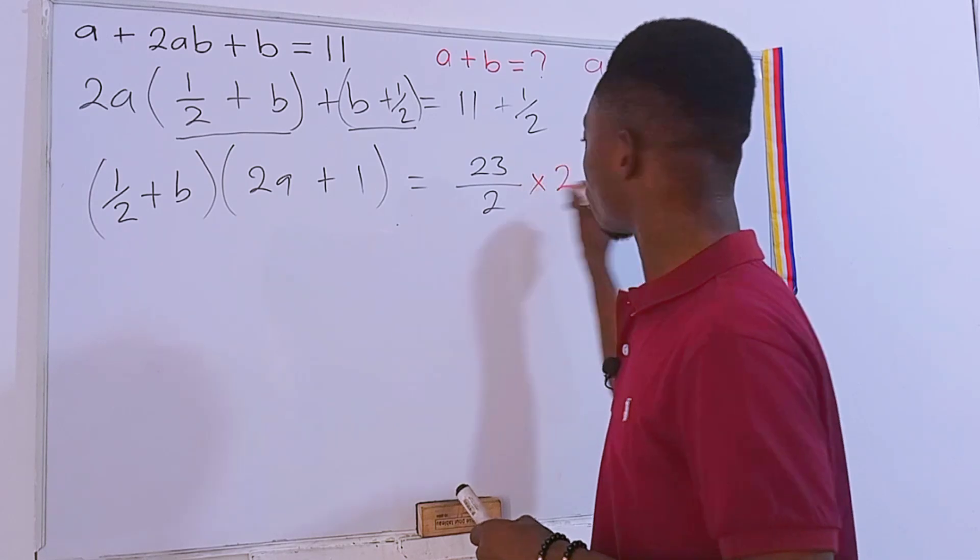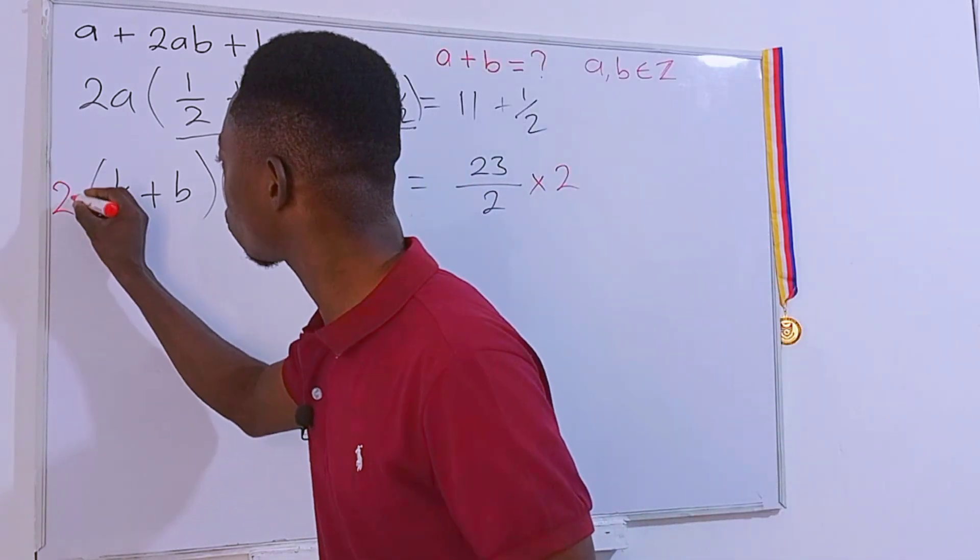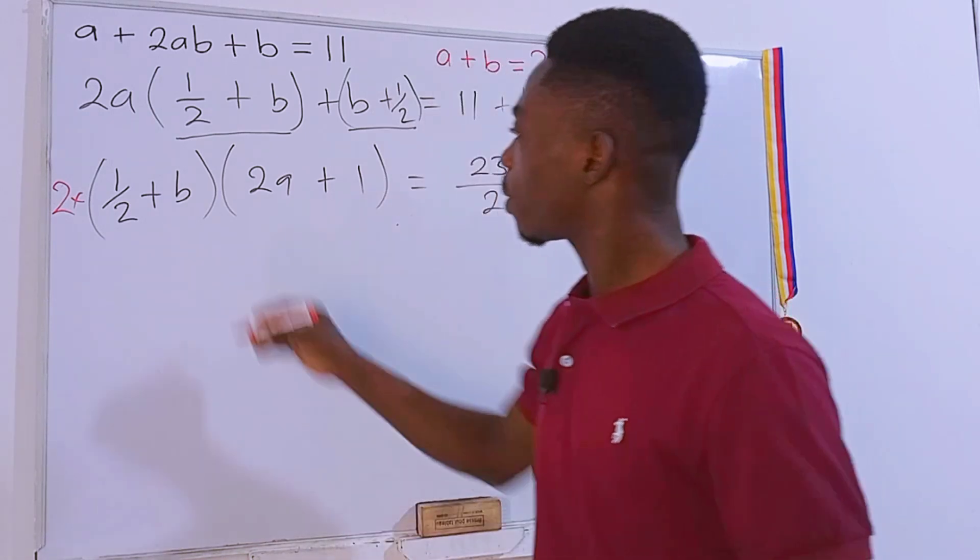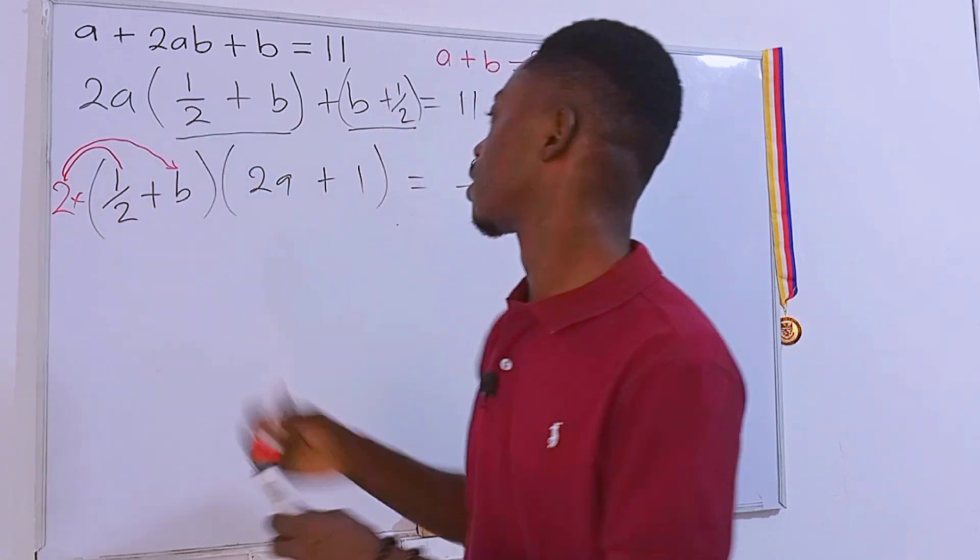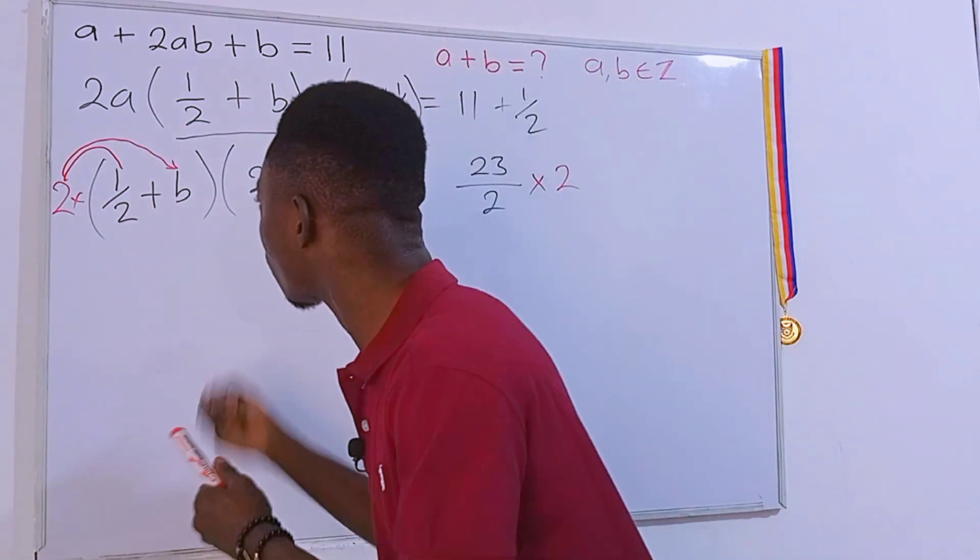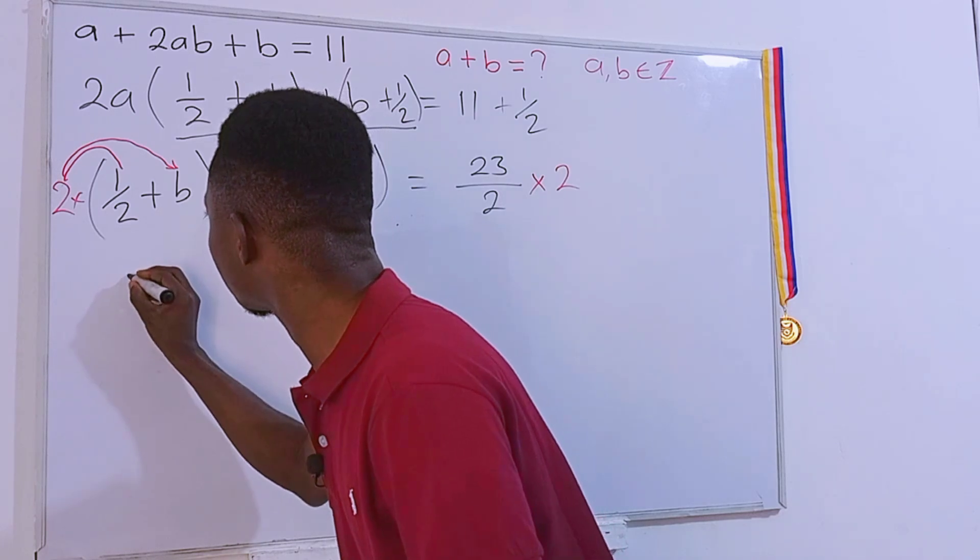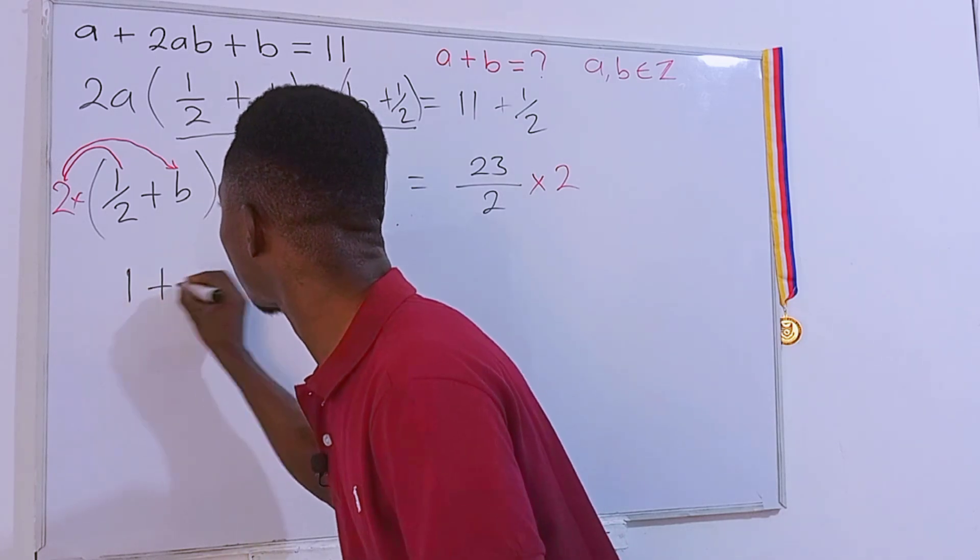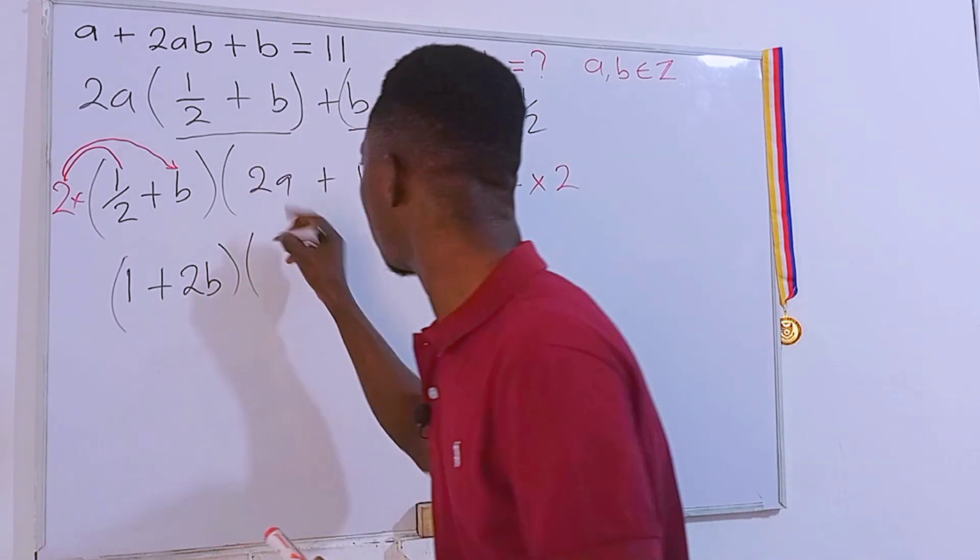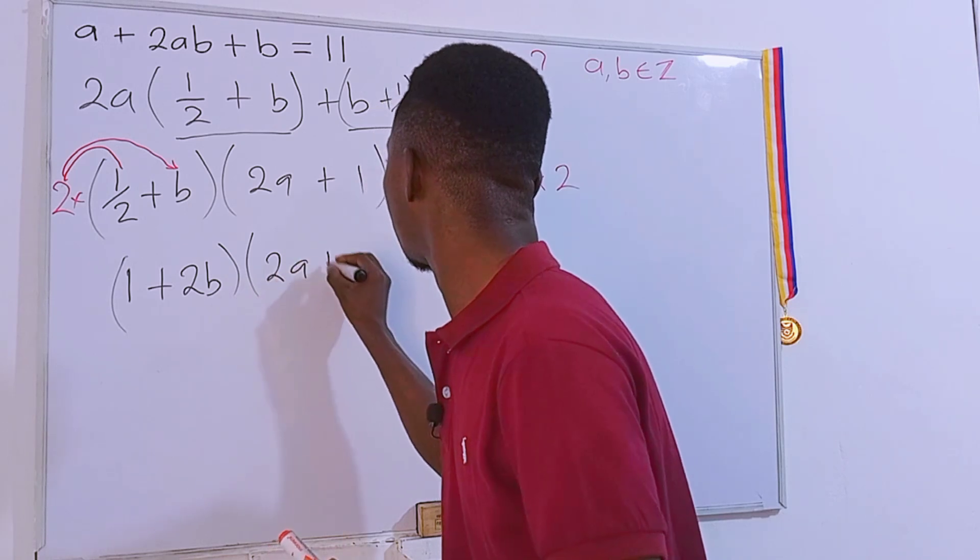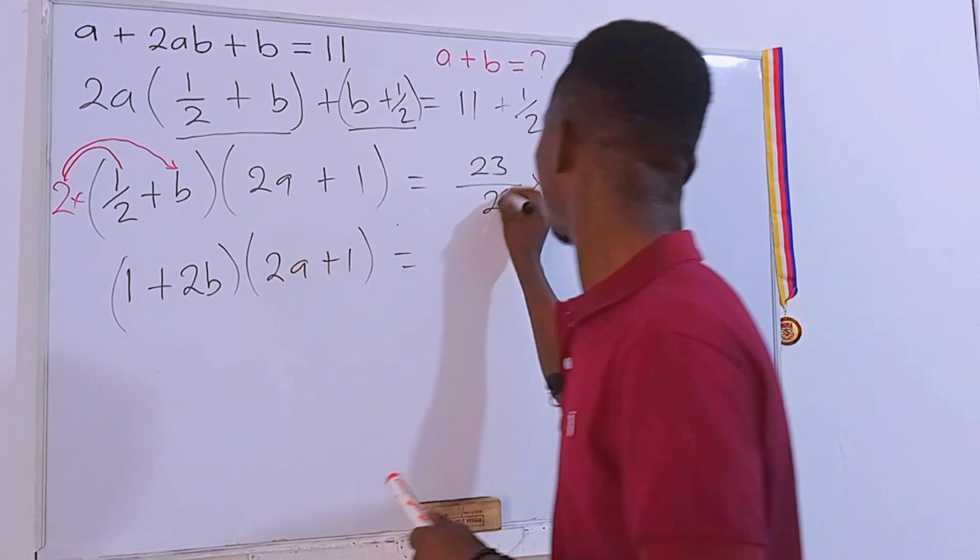Now you realize that if we get rid of this fraction here, everything will be pretty much easy. So let's get rid of this by multiplying the inside of the equation by 2. You can distribute this so that you have 2 times 1/2 is just 1, then plus 2 times b is 2b. Then here we will have 2a + 1, and this is equal to 23.